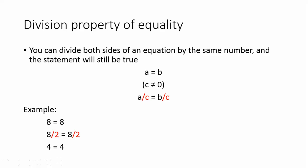Similarly, the division property of equality states you can divide both sides of an equation by the same number, and the statement will still be true. For example, we have A equals B, and as long as C is not 0, you can divide both sides by C and still have a true statement. In the example, we have 8 equals 8; dividing both sides by 2, we end up with 4 equals 4.